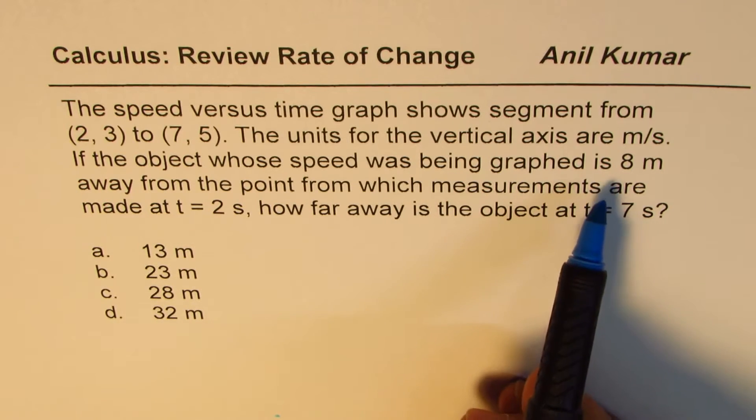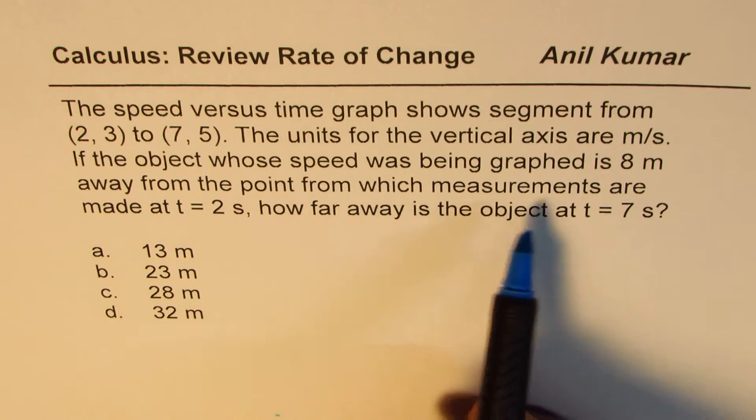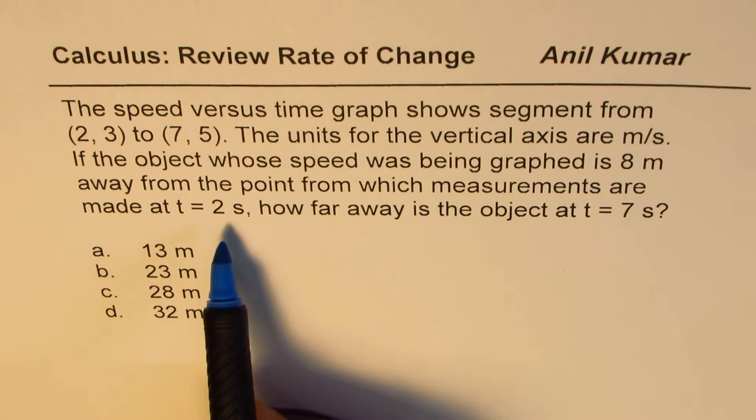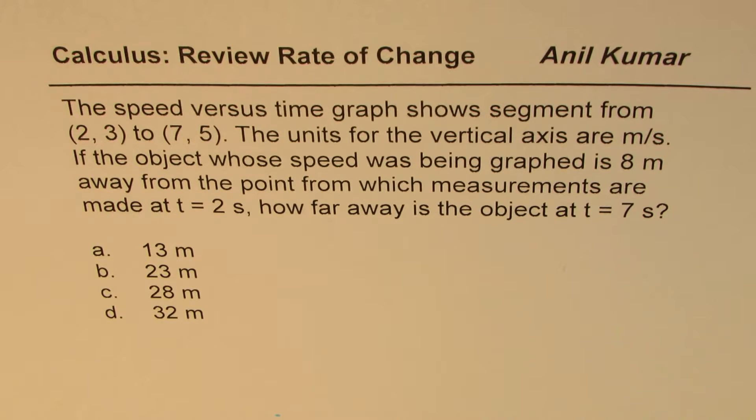If the object whose speed was being graphed is 8 meters away from the point from which measurements are made at t equals 2 seconds, how far away is the object at t equals 7 seconds? Four options are given to us. You can pause the video, answer the question, and then look into my suggestion.